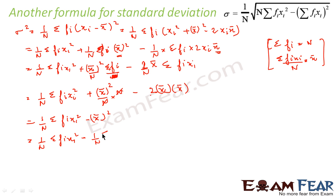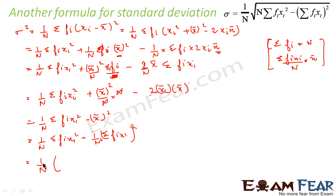So we can write the variance as 1 by n sigma fi·xi squared minus (1 by n sigma fi·xi) whole square. Factoring out 1 by n squared, this becomes 1 by n squared into n·sigma fi·xi squared minus sigma fi·xi squared.